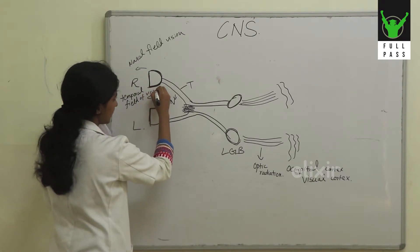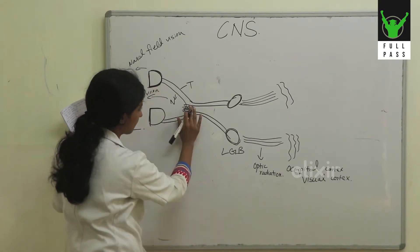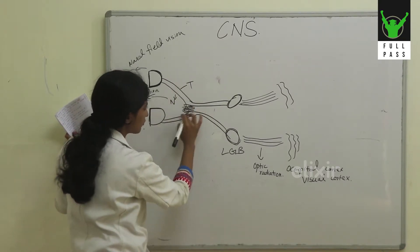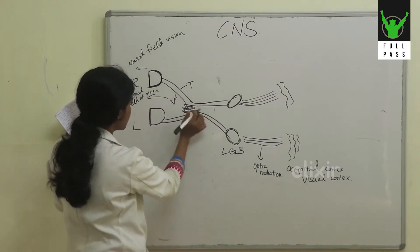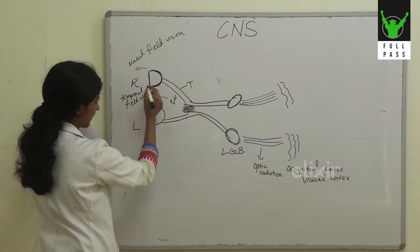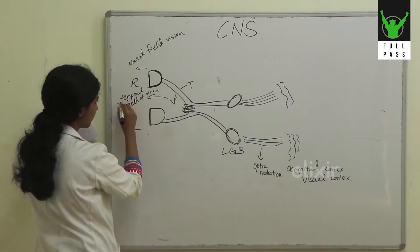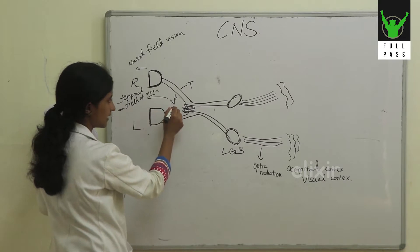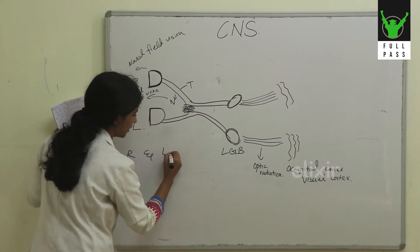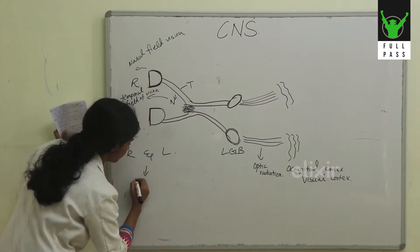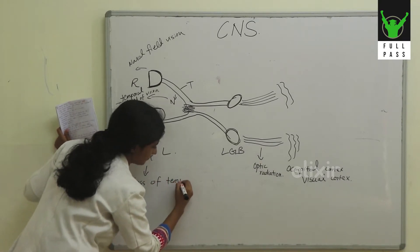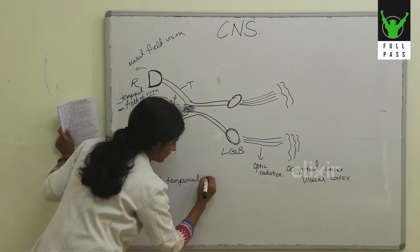When pituitary tumours compress the optic chiasma, it is mainly the nasal fibres — both nasal fibres — that are affected. So you have a loss of vision on the right as well as the left temporal field of vision, because the nasal fibres of both eyes are getting affected.